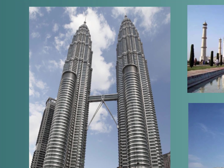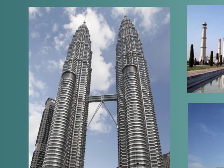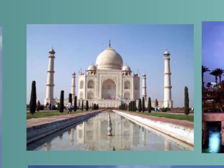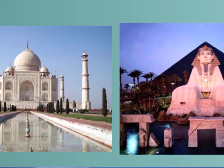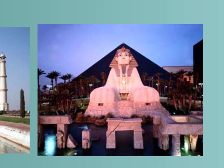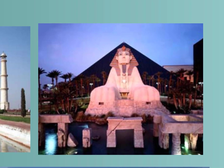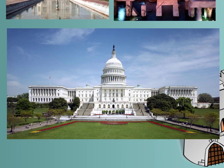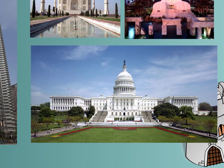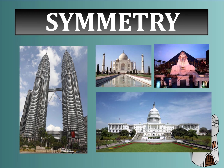Taipei 101 is symmetrical down the center, the Taj Mahal is symmetrical, the Luxor Hotel and Casino looks very symmetrical from the front, and the US Capitol building is seen to be very symmetrical as well.